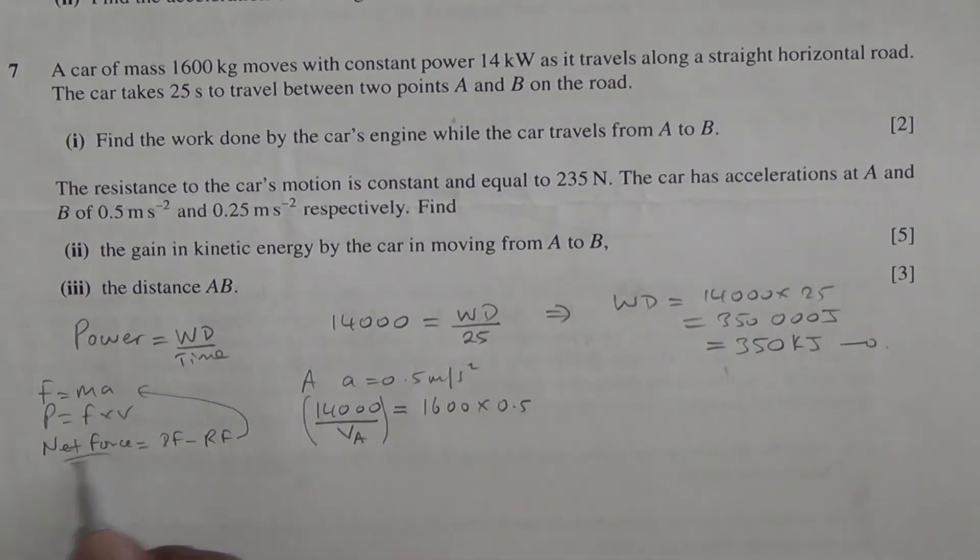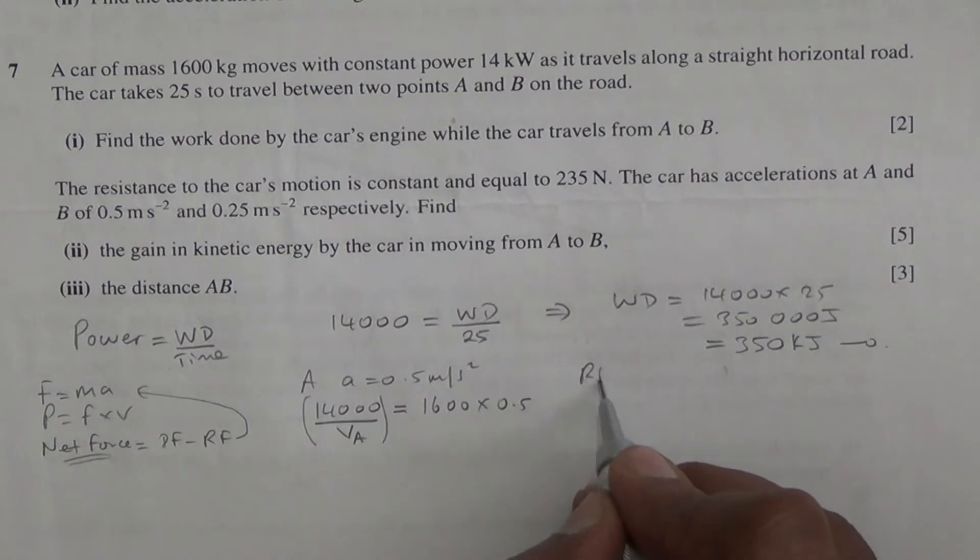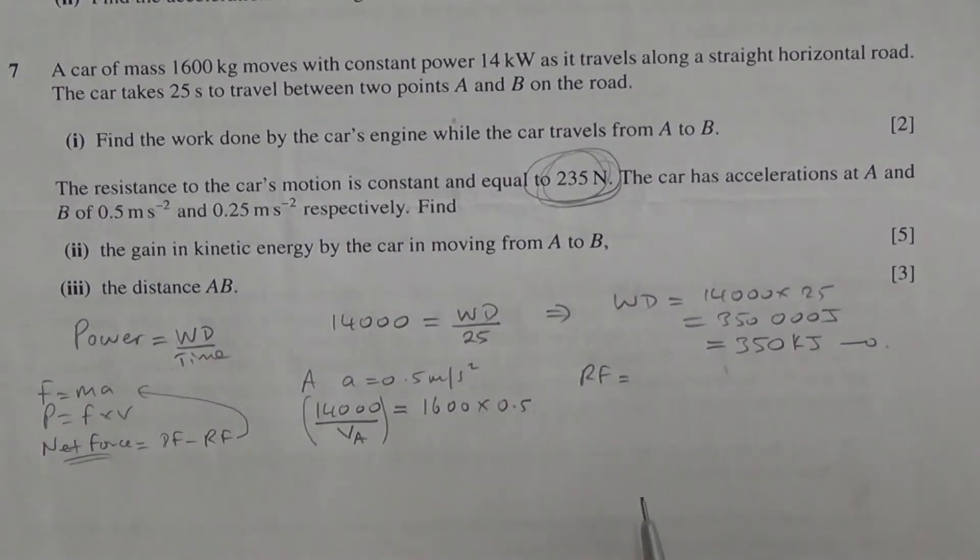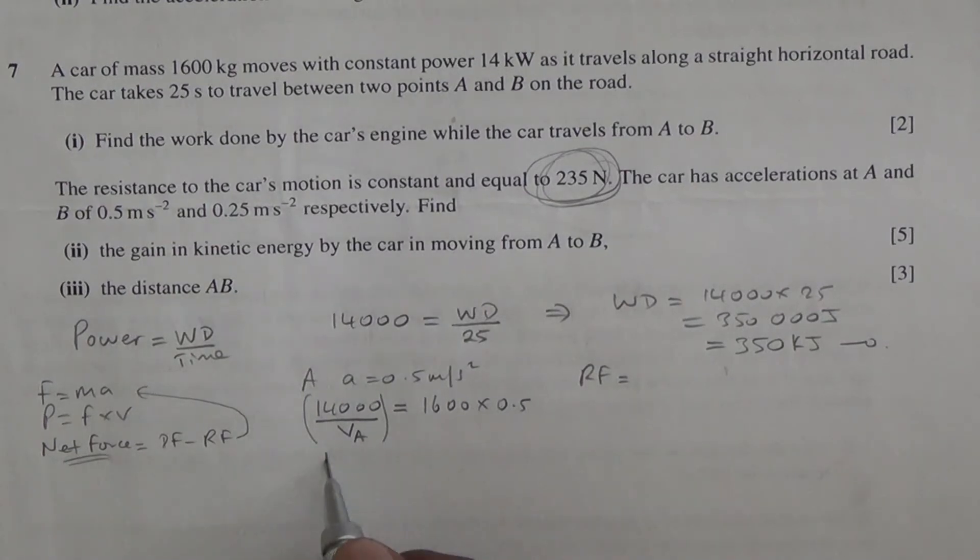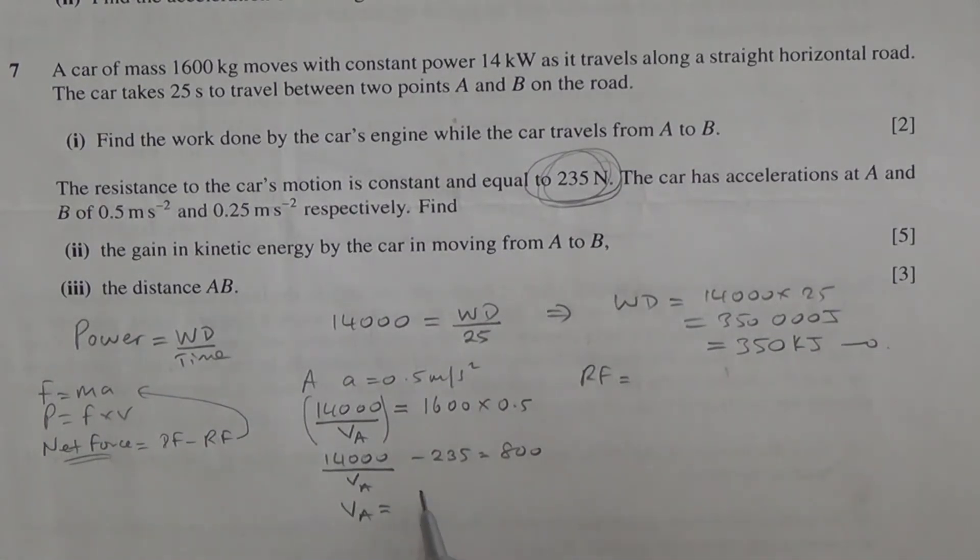With the driving force, what we need is net force. So we need to minus the resistive force. The resistive force has been given in the question as 235. So let us subtract this away from here. So 14,000 over VA minus 235 is equal to this time, so that's going to be 800. If you do the algebra, you will see that the velocity at A ends as 13.53 meters per second.